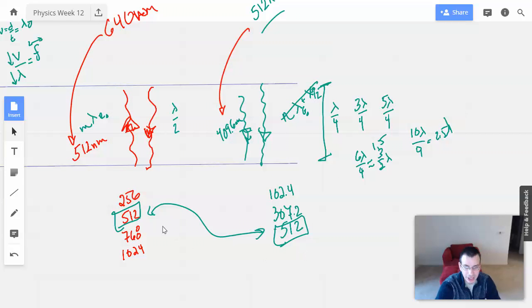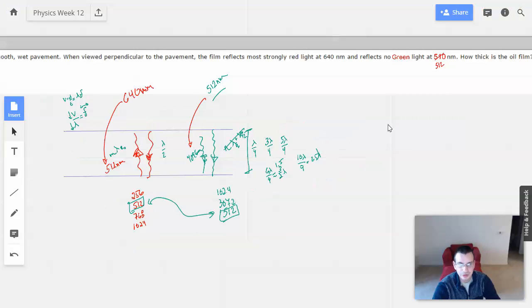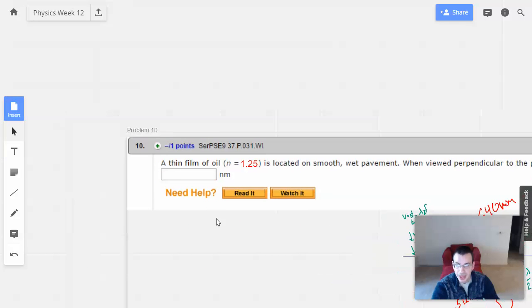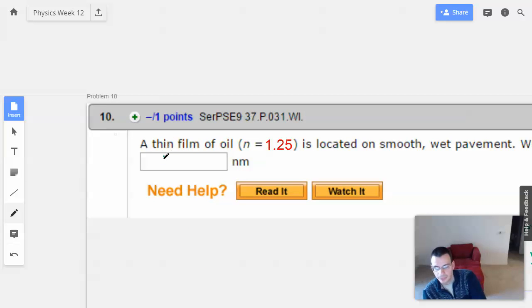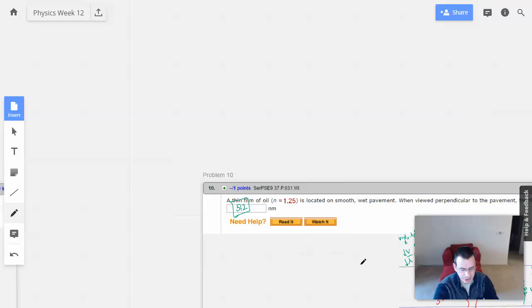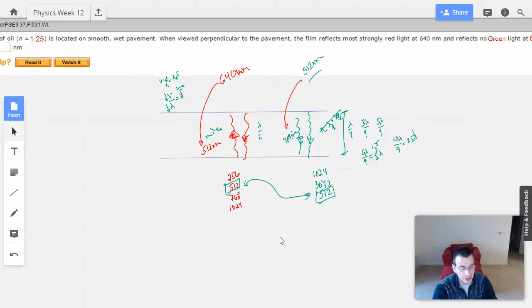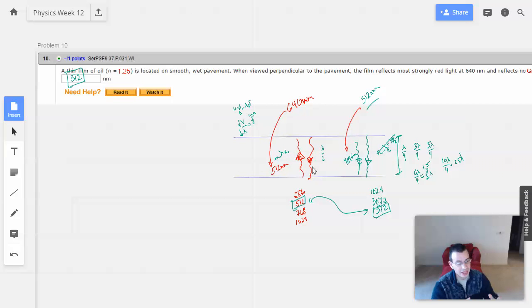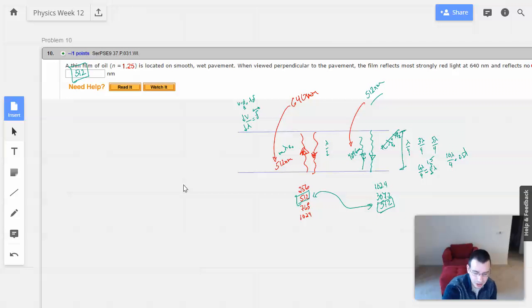So we look at these common, and those are it. Constructive for red, strongly reflects red, and destructive for green, it reflects no green. How thick is the oil film? 512. And it could be more than 512, but it would be multiples of 512. I think it would be multiples of 512, I'd probably have to check to make sure. But that's the concept for this guy. So not too bad once you understand that you have to land on a complete whole number and you'll get constructive interference. If you land on a 0.5, you'll get destructive interference. Alright, that's it for problem 10.